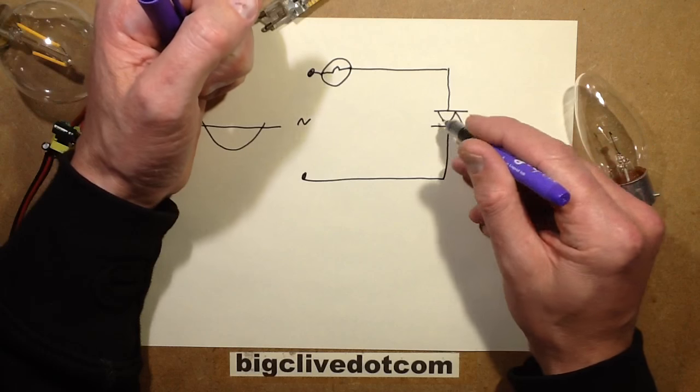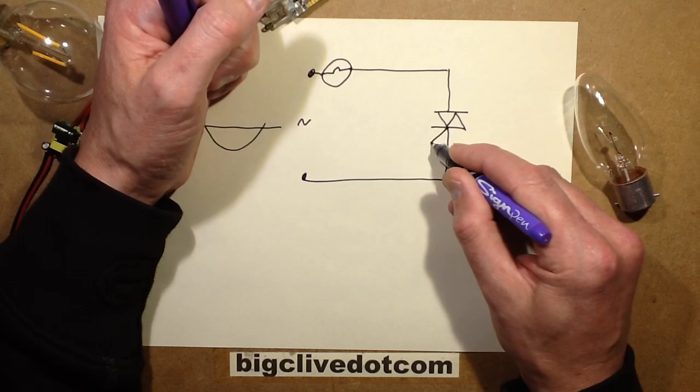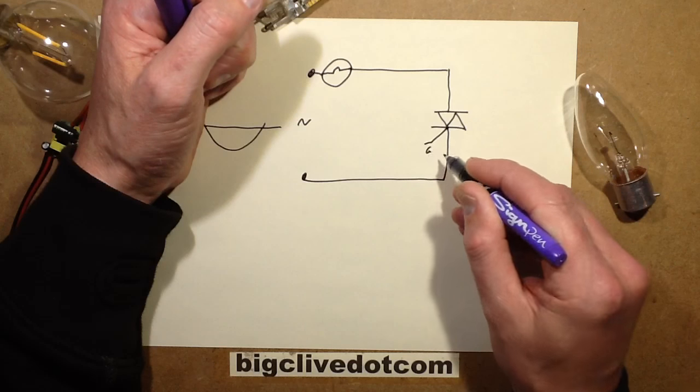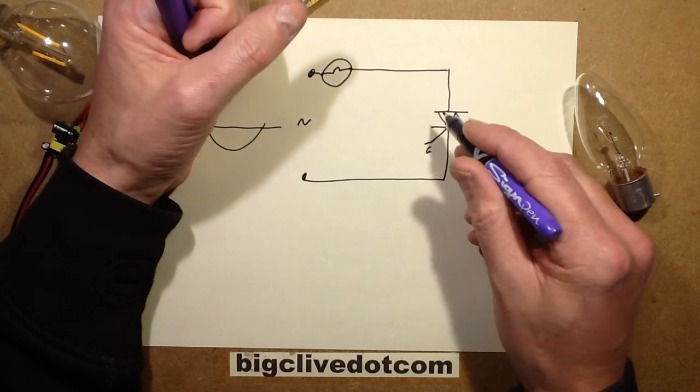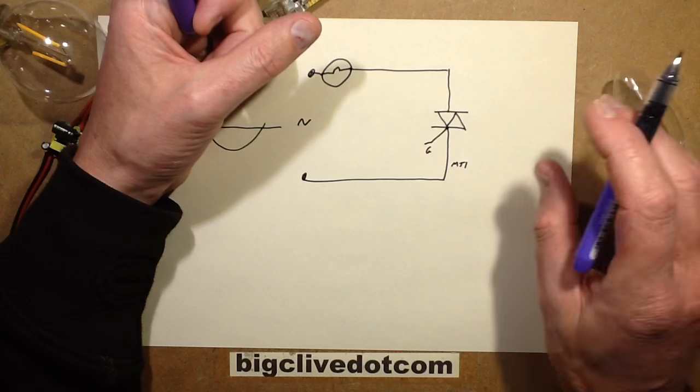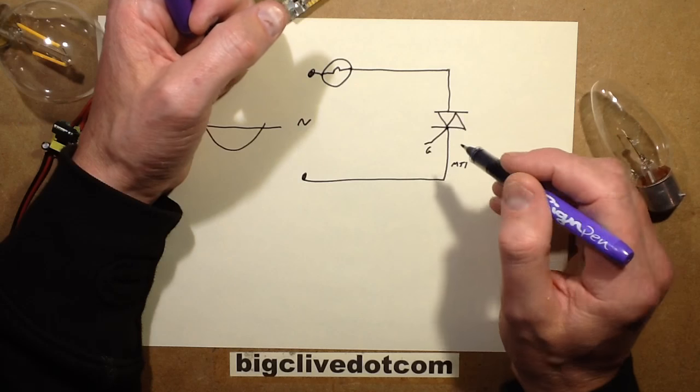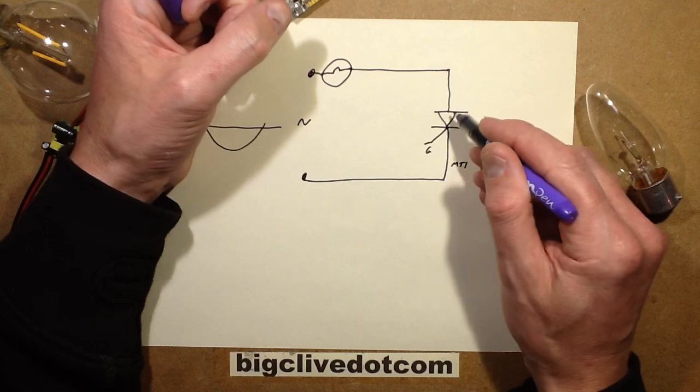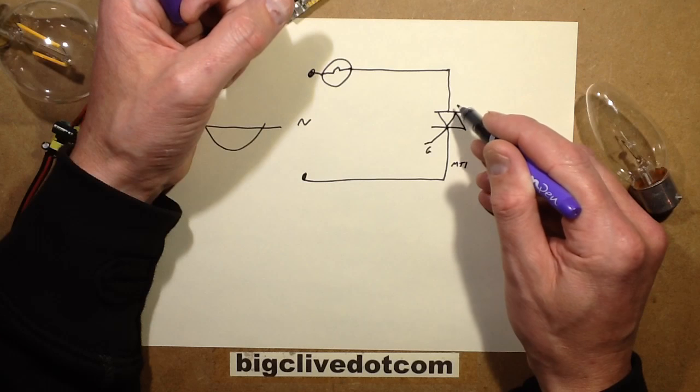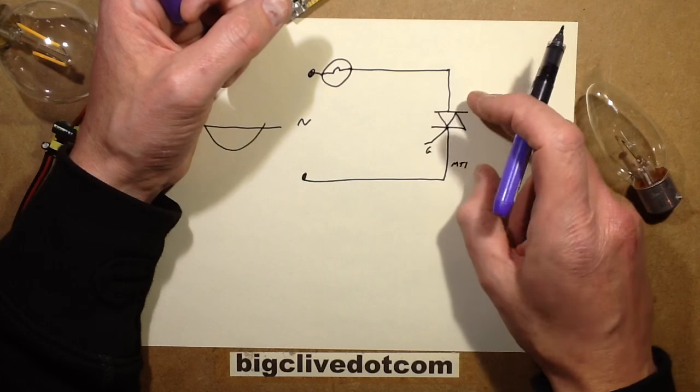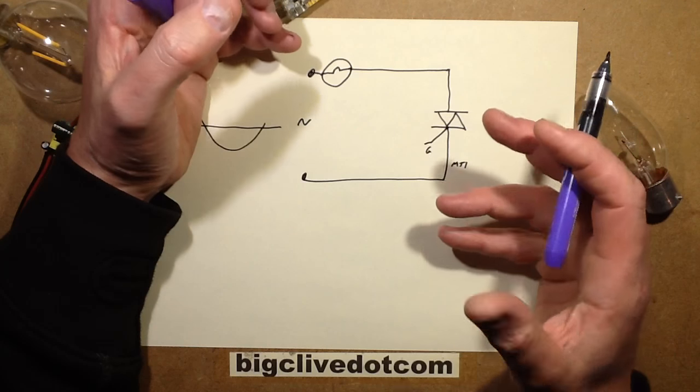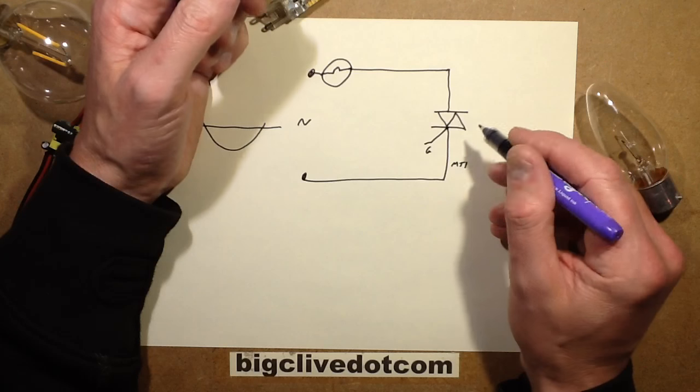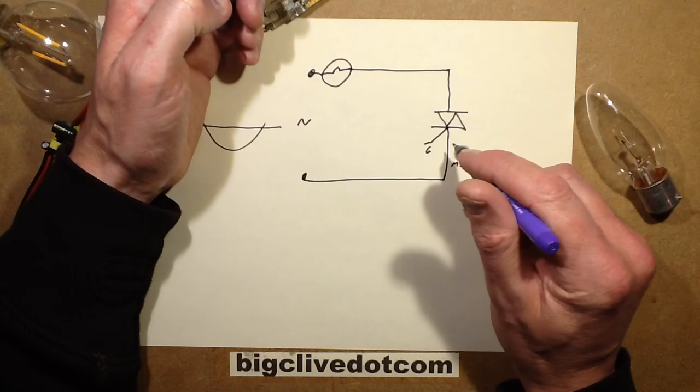Now the characteristic of triacs is that they've got a gate connection, and with reference to what they call MT1, the gate, if it's taken either positive or negative depending on the polarity across the triac, it will turn that triac on. Once the triac's on it latches, and the only way to turn the triac back off again is to reduce the current going through it to zero. It has what's called a holding current, not completely to zero, it has a minimum holding current which is usually about say 50 milliamps, and that is also a problem with these dimmers.